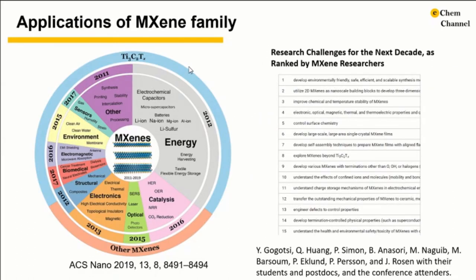As discussed in the previous slides, MXenes have a large and diverse family. There are currently more than 30 different experimentally made stoichiometric MXenes and more than 100 theoretically predicted compositions with distinct electrical, physical, and electrochemical properties. In addition, solid solutions on M and X sites are possible, with the possibility of having multiple, single, or mixed surface terminations. However, more than 70% of all MXene research has focused on the first discovered MXene, the titanium carbide MXene. To date, the large unexplored family of MXenes and their unique combinations of properties opens the door to a variety of different applications.